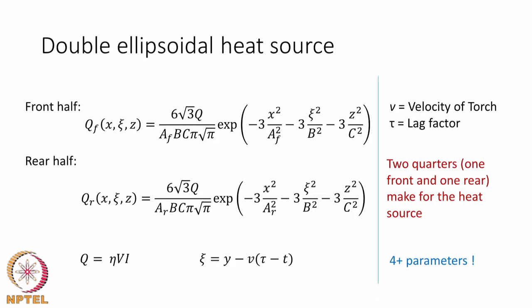The choice of heat distribution between front and rear is made by checking whether the heat source is replicating the heat transfer profile correctly. The Q value in front of the exponential shows the nominal heat input — that is, V·I (voltage and current) multiplied by eta, the efficiency of heat transfer. The three distances are given with y modified by time: y − vt − τ, where v is velocity, t is time, and τ is a lag factor.